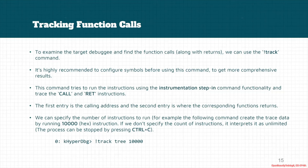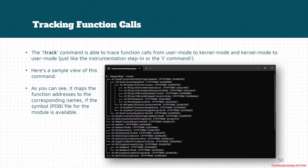We can specify a number of instructions to get executed in the target debuggee, or we could use the default behavior. This is the view of the track command, and as you can see, it maps the function addresses to the corresponding names, getting those names from the symbol PDB files.